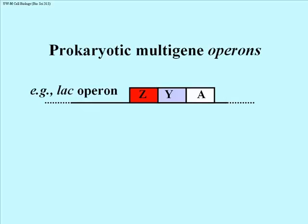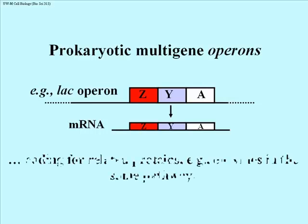The lac operon is a three-gene operon. These three genes are important in metabolizing the sugar lactose, which is a disaccharide — one of the two sugars is glucose and the other is galactose. Here we have a cartoon of the lac operon's genes that code for three enzymes involved in metabolizing lactose. This operon is transcribed as a single long mRNA encoding the three genes for these enzymes in the same pathway.